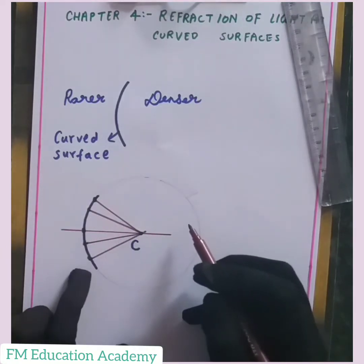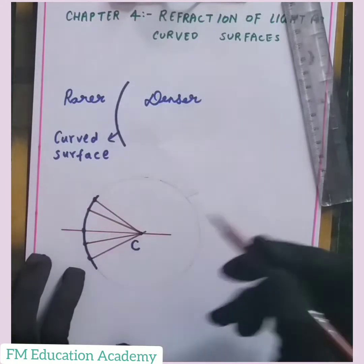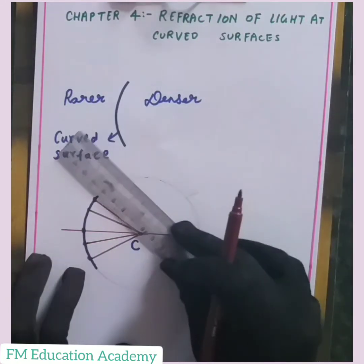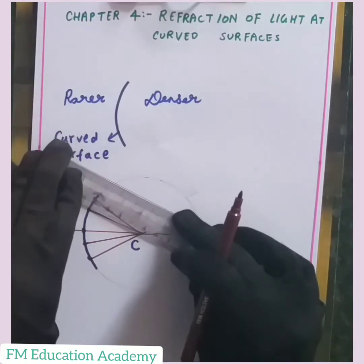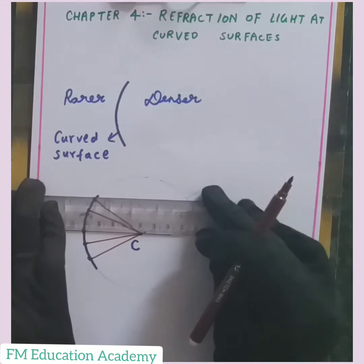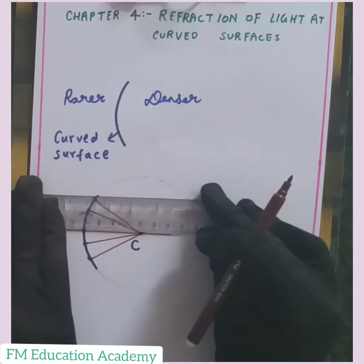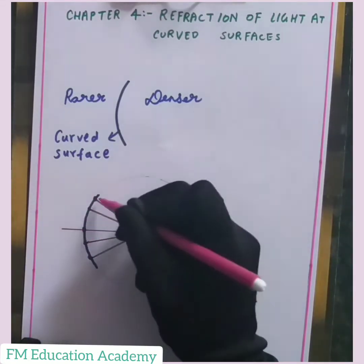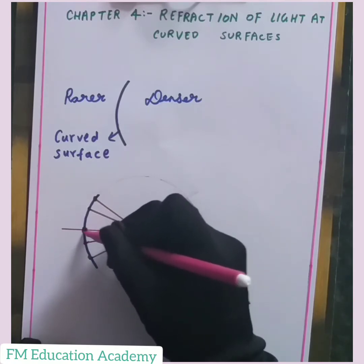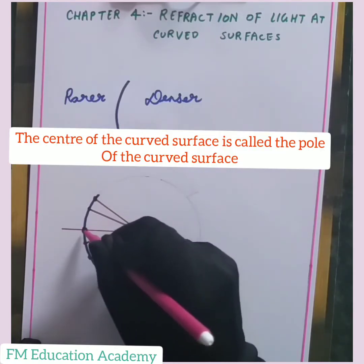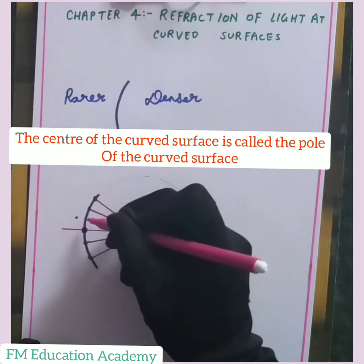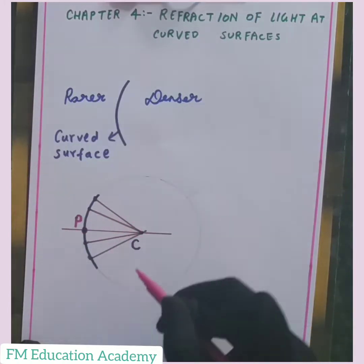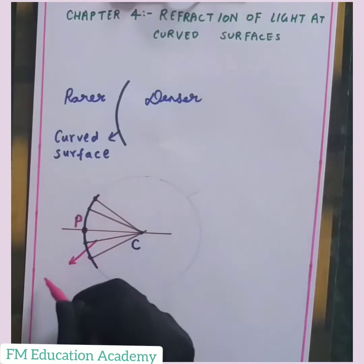We can see that the direction of the normal is changing — initially the direction of the normal is like this, but the direction can change. This curved surface has a center point — the middle point of the curved surface — this is called the pole, indicated by the letter P. So all these lines are my normals.